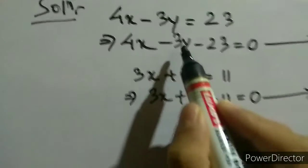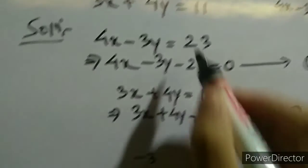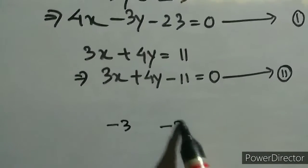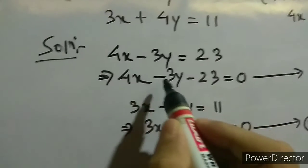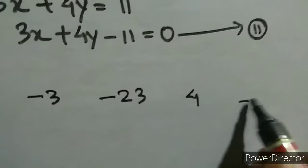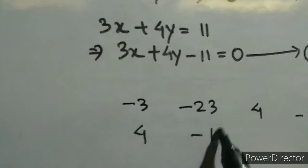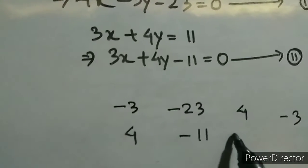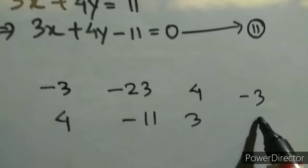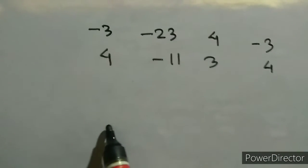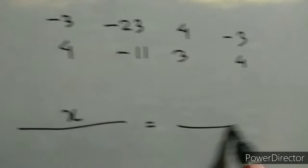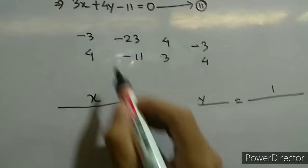Now we'll use the cross multiplication method. We start from the y coefficient. For equation 1: y coefficient is minus 3, constant is minus 23, x coefficient is 4, and again y coefficient is minus 3. For equation 2: y coefficient is 4, constant is minus 11, x coefficient is 3, and y coefficient is 4. Then we write x equal, y equal, 1.